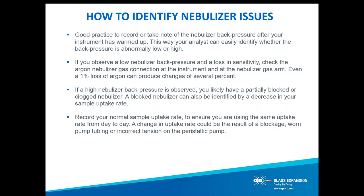In addition to monitoring nebulizer back pressure, your laboratory can also record your normal sample uptake rate to ensure you're using the same uptake rate from day to day. A blocked nebulizer can also be identified by noting a decrease in your sample uptake rate. One very common suggestion: replace your peristaltic pump tubing on a daily basis. Stopping or rerunning analysis due to worn or dirty pump tubing is not a worthy expense, and can be easily eliminated if pump tubing is replaced daily — at least the sample and/or internal standard pump tubing, as those are critical for nebulizer performance.